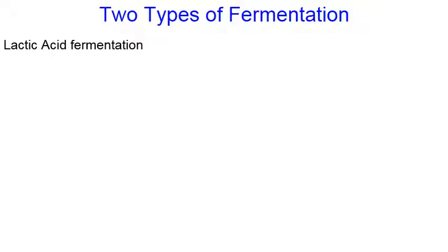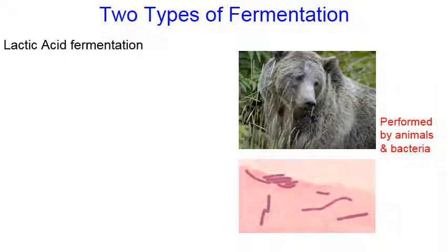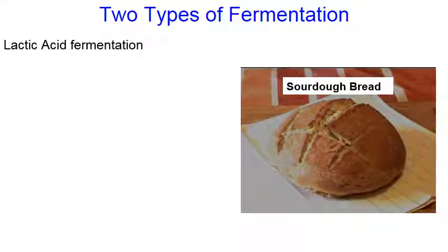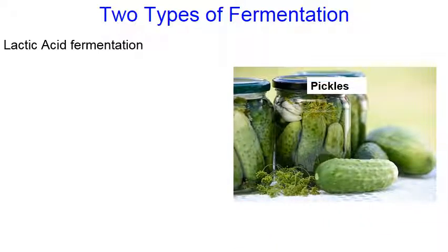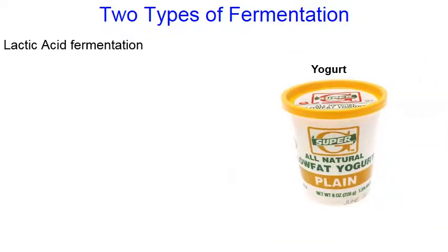There are two kinds of fermentation. The first is lactic acid fermentation, performed by the human body, other animals such as bears, and many types of bacteria. It's the bacteria species that do lactic acid fermentation that give sourdough bread its unique flavor. We also use these bacteria in fermenting cucumbers to make pickles, and in the production of yogurt — yogurt has a very sour taste because of the lactic acid produced by these bacteria.